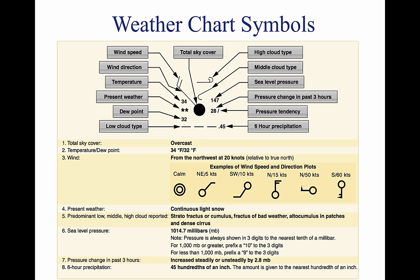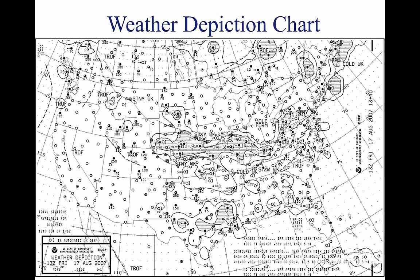7. Dew point — given in degrees Fahrenheit. 8. Present weather — over 100 different weather symbols are used to describe the current weather. 9. Temperature — given in degrees Fahrenheit. 10. Wind — true direction of wind is given by the wind pointer line, indicating the direction from which the wind is coming. A short barb is equal to 5 knots of wind; a long barb is equal to 10 knots; and a pennant is equal to 50 knots.